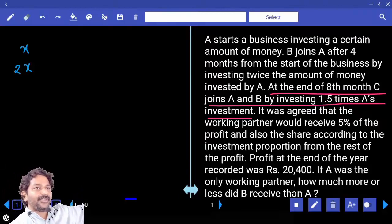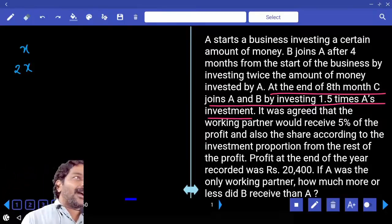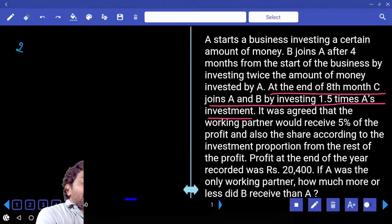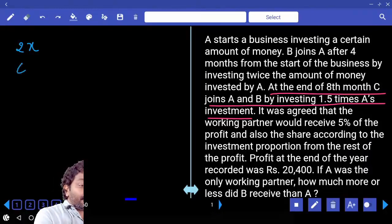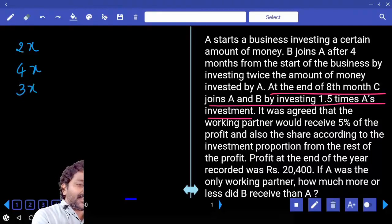If you take 1.5, you need to start with decimal. I don't want to start with decimal. So what I will do is I will start A investment as 2X. B invested double, 4X. C invested 1.5 times, that is 3X.